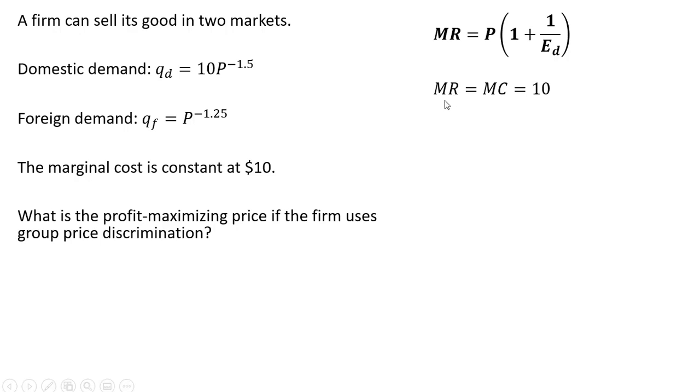When we profit-maximize, we set marginal revenue equal to marginal cost. In this problem, marginal cost is constant at $10. So we're going to set this marginal revenue equal to marginal cost, or $10.